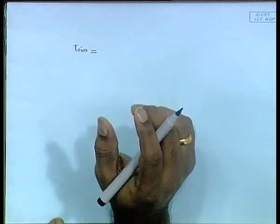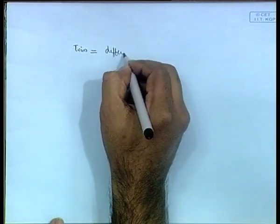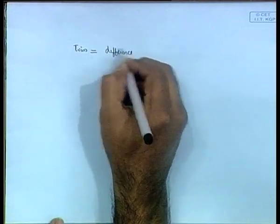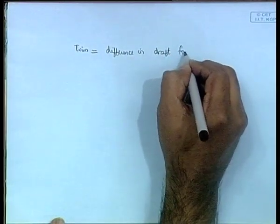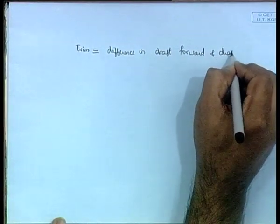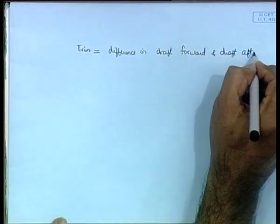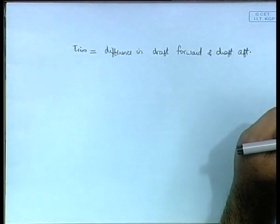Trim is defined as the difference in draft between forward and aft. You take draft aft minus draft forward (or draft forward minus draft aft) to get the trim. That is the definition of trim.